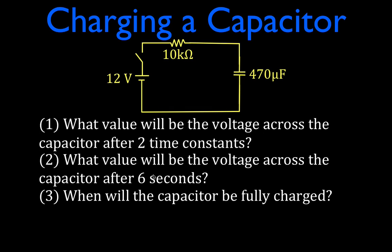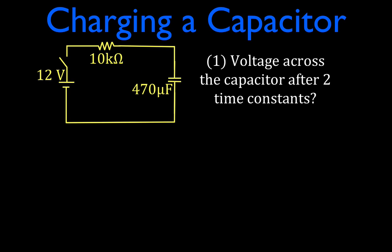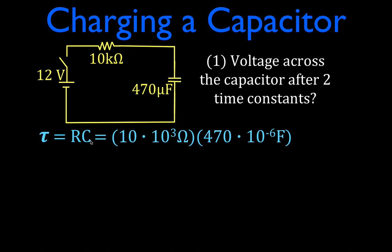What does it mean for a capacitor to be fully charged? First, we have to figure out what one time constant is. The symbol we use for the time constant is tau. We calculate it by multiplying resistance times capacitance: R times C, which is 10 times 10 to the third ohms times 470 times 10 to the minus 6 farads. That gives us a time constant of 4.7 seconds.